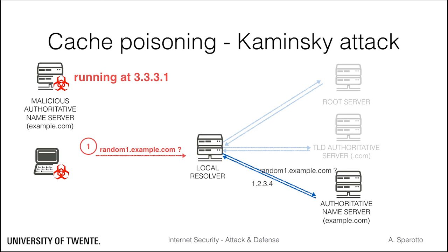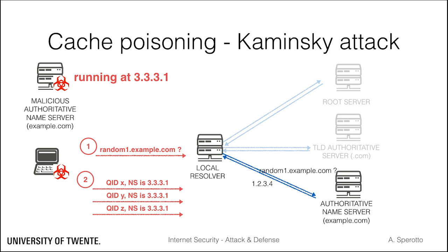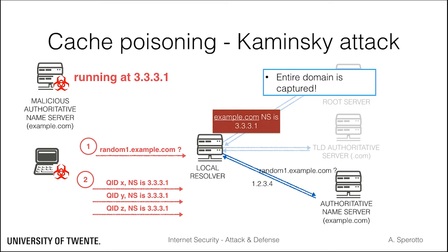This time, the attacker does so for a random subdomain of example.com. This has two advantages: first, a random subdomain is unlikely to already be in the cache; and second, if the attacker does not guess the answer parameters in time, he can try again with another random subdomain. Again, the attacker brute forces the answer hoping it gets accepted. The crucial difference is in the content of the forged answer: the attacker can use the additional section to delegate the resolution process to the malicious authoritative name server. If this query is accepted, the attacker captures the entire domain, because any query to a subdomain of example.com will be answered by the malicious authoritative name server.